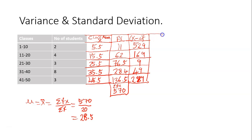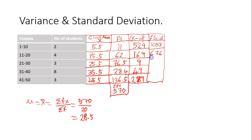Next, create another column for f times deviation squared. For the first class: frequency 2 times 529, you get 1058. For the next class: 4 times 169, you get 676. Then 3 times 9 is 27. Then 8 times 49 is 392. And the last class: 3 times 289 is 867.